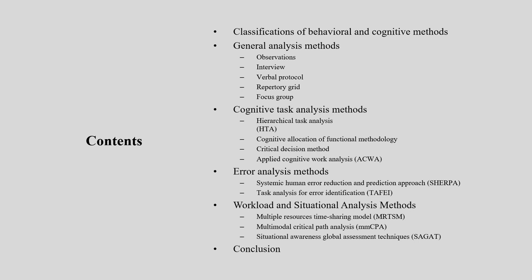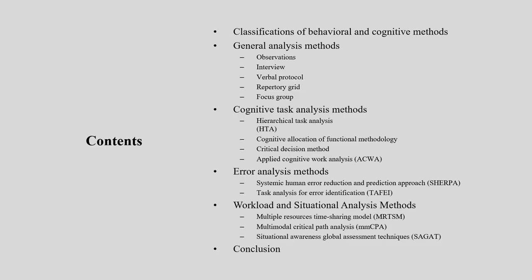First we have the general analysis method, under which there are several techniques. Then we have cognitive task analysis method, which is a major area for behavioral and cognitive ergonomics. Then error analysis, which is important when talking about production and productivity. Then workload and situation analysis method, which is an area requiring attention especially at the system level. Under general analysis method, we will focus mainly on observation, interview, verbal protocol, repertory grid, and focus group. Today I will give a brief of them.